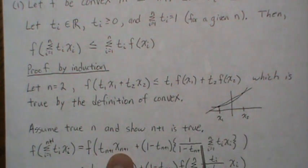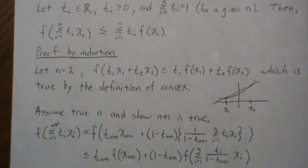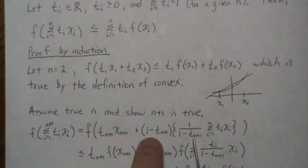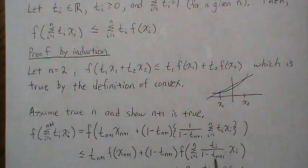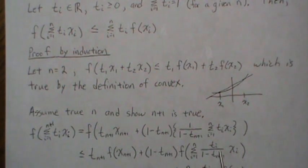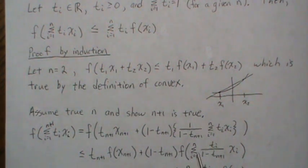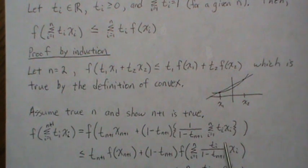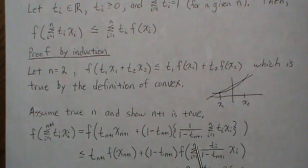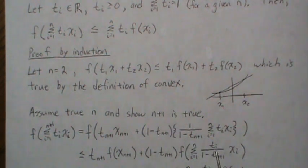Here t_{n+1} and (1 - t_{n+1}) add to 1, so we can apply Jensen's inequality for n=2 to these two terms. Now looking at the inner piece — the sum from 1 to n of t_i * x_i over (1 - t_{n+1}) — since summing t_i from 1 to n equals (1 - t_{n+1}), those coefficients actually sum to 1, and there are only n of them, so we can apply Jensen's inequality by the inductive hypothesis.